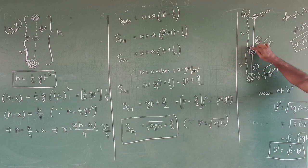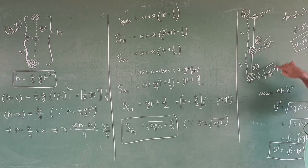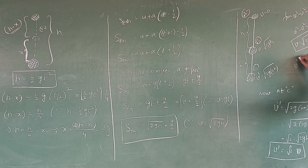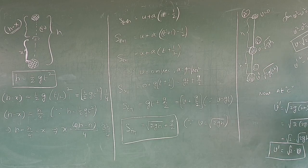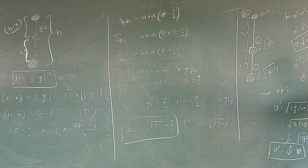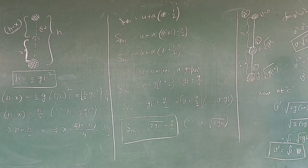When it travels double the distance — h plus h equals 2h — use the same formula: v1 squared minus u squared equals 2g into 2h. Since u equals zero, v1 squared equals 2g into 2h, so v1 equals root over 2g times 2h. That can be written as root 2 into root 2gh. Since root 2gh equals v, therefore v1 equals root 2 into v.